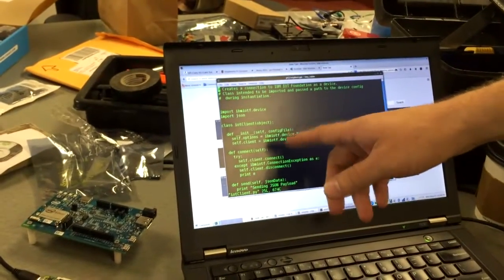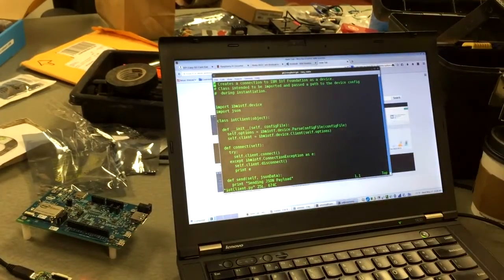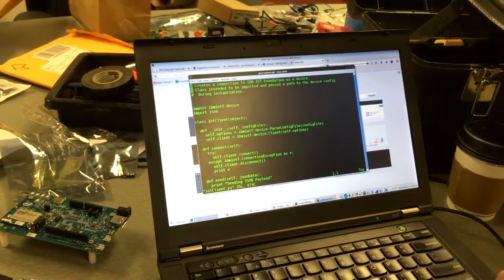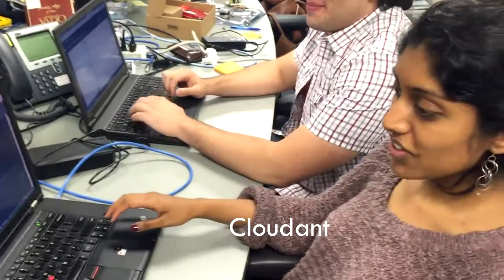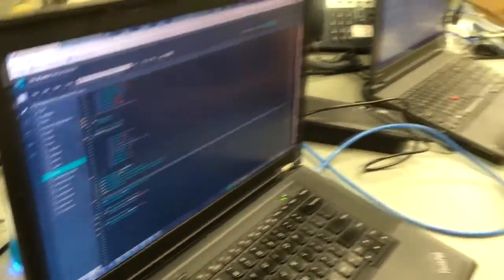Instantiate the object and you can connect. Alright, and you pass it a configuration file to connect to IoT Foundation. So we've created a boilerplate and we're compiling it with code clad into Node.js. And we're trying to fetch code from the other one and we're trying to make sense out of it.